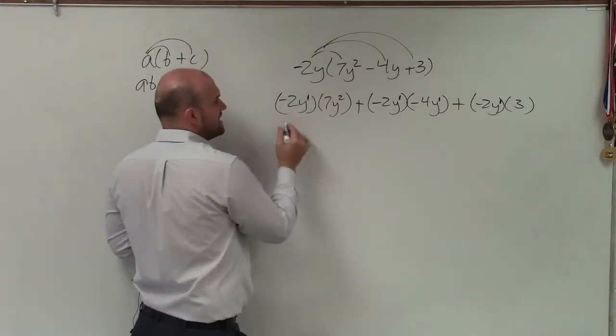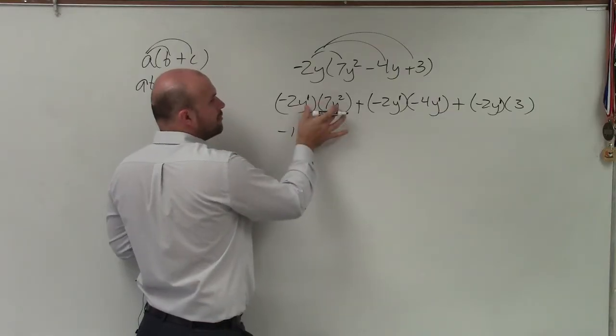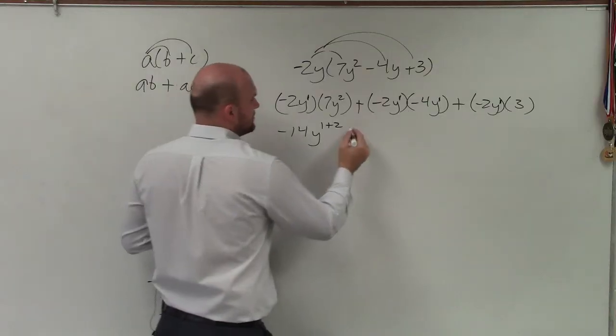So here, I have negative 2 times 7, which is a negative 14. And then I have y. When we multiply exponents, we add the powers.